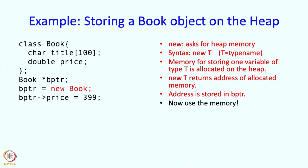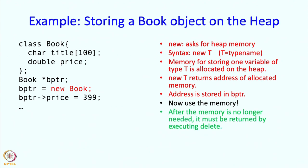In this way we can keep using the memory as much as we want — we can change the price, change the title, do whatever with it. At some point we will decide that we do not need this memory any longer, so we should return the memory back. We tell the heap manager that we were using this memory but now we do not need it — take it back. That is done by the command delete BPTR, which returns that memory back.